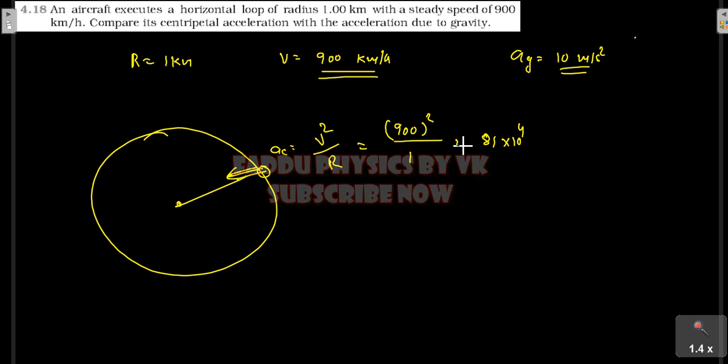First, we need to convert this to m per second. If we do 900 into 1000 divided by 3600, this equals 250 m per second.